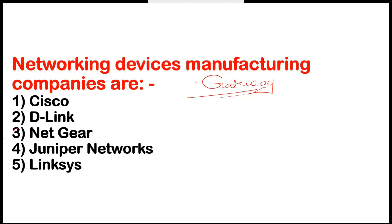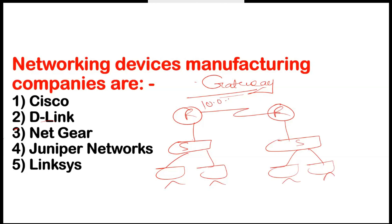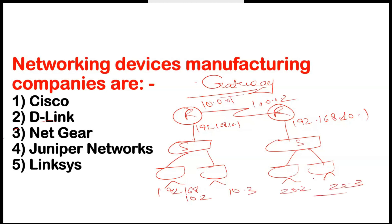Who knows how to set the IP address? If I create one topology, here one router is available and one switch is available. One more router is there, one switch is there, and PCs are connected. Here I have IP 10.0.0.1, here 10.0.0.2, here I have 192.168.10.1. Here a different network, so 192.168.20.1. And on the PC I have 192.168.10.2 and 10.3, 20.2 and 20.3.